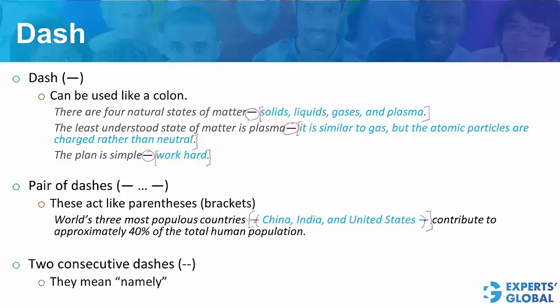So, when you see 2 consecutive dashes in a sentence, just ask yourself whether replacing the dashes with namely would lead to a proper sentence.